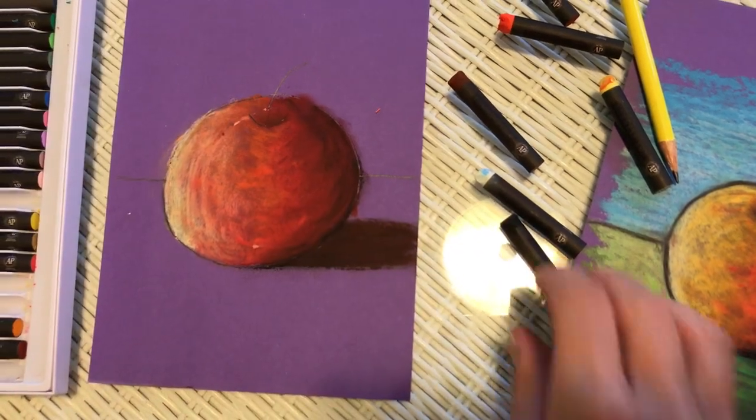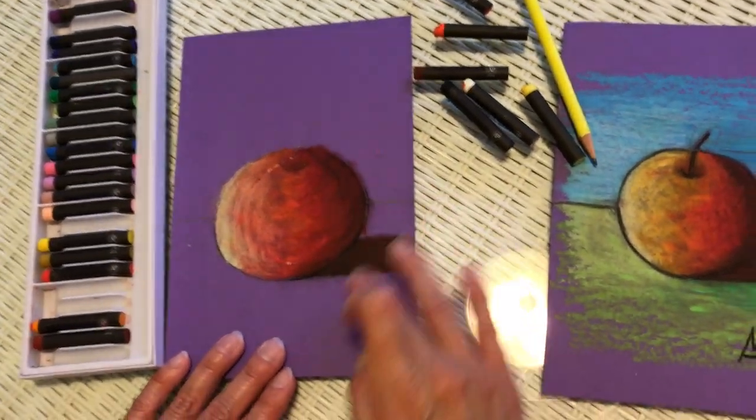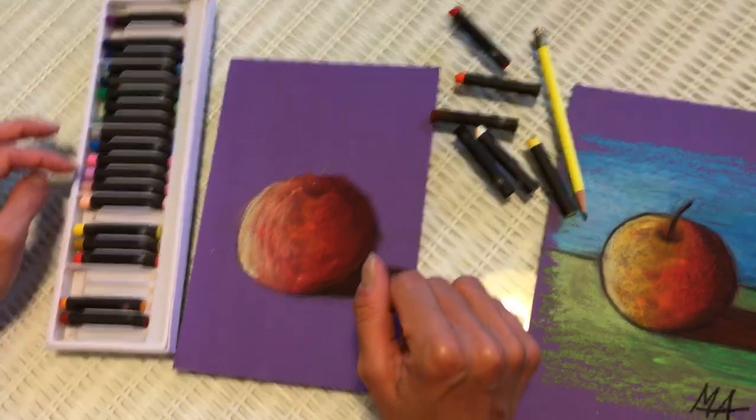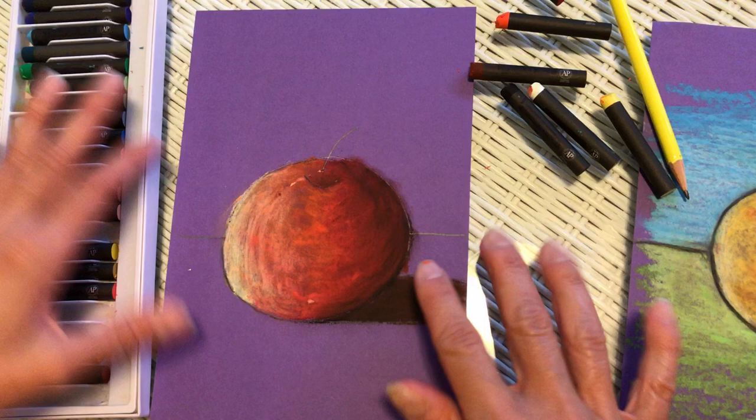Now, I want to choose two different colors for the table and for the wall in the background. I want to choose some colors that create contrasts. So, something completely different than what I use here on my apple.